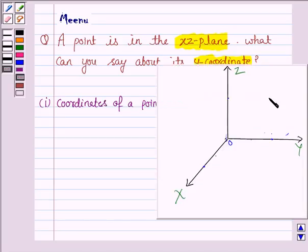So here, we are given a point in the y-z plane, then its coordinates will be 0, y, z, where y is the distance of the point from the origin on the y-axis. This much distance is y, and z is the distance of the point from the origin on the z-axis, and this much distance is z.